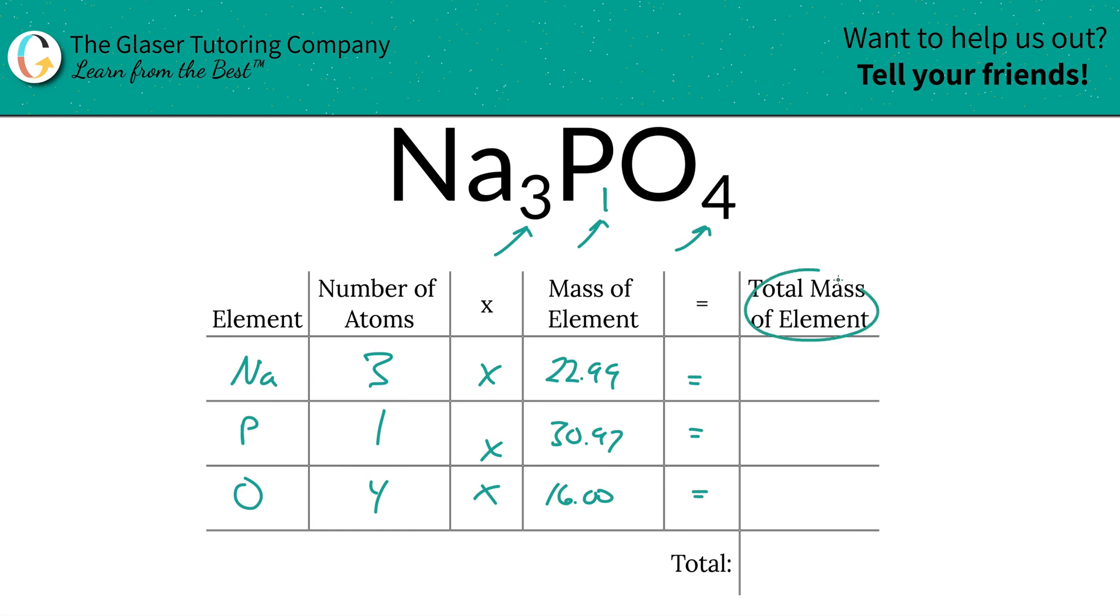Then we're going to find the total mass of each element here by simply multiplying the row on across. So the total mass of sodium is going to be 68.97 units of mass. Phosphorus, well, that multiplication's easy, right? 30.97. And then oxygen here, when we multiply that on across, is going to be 64.